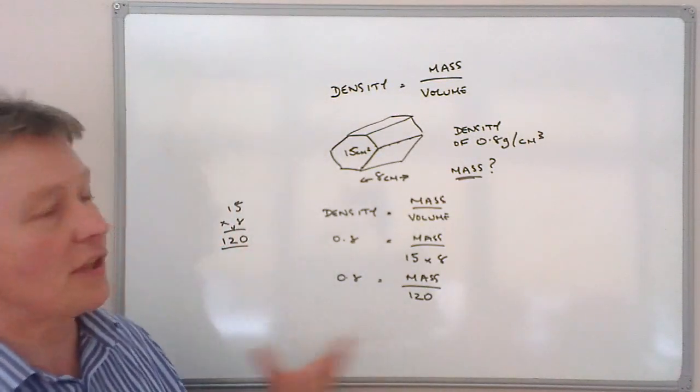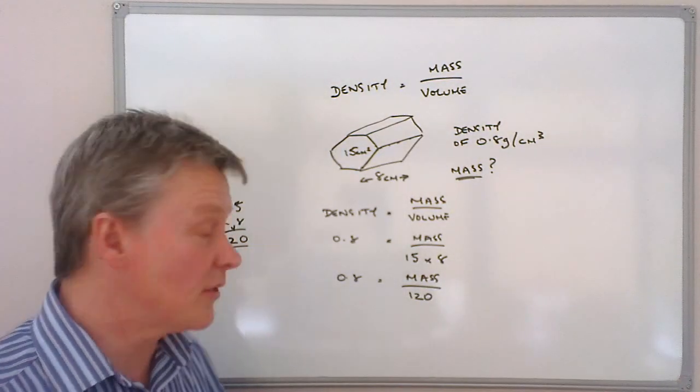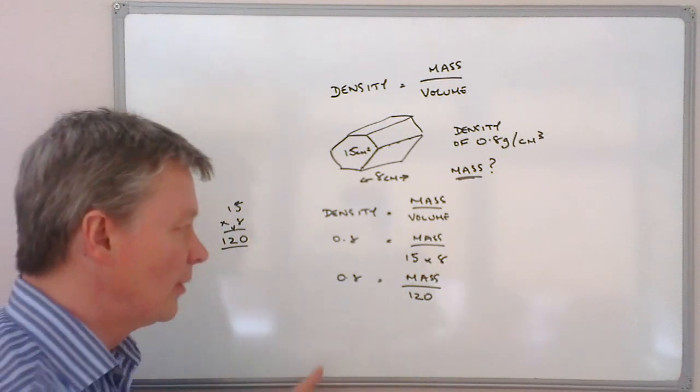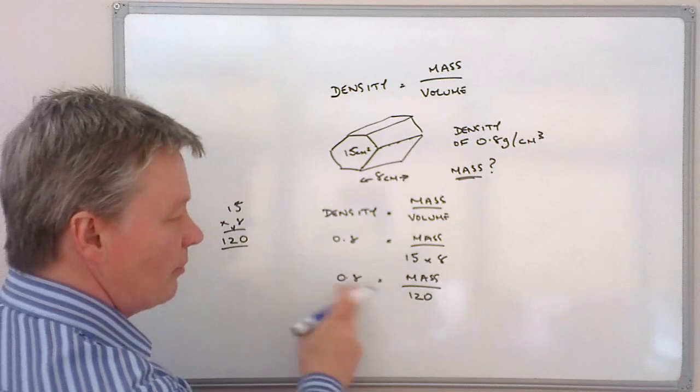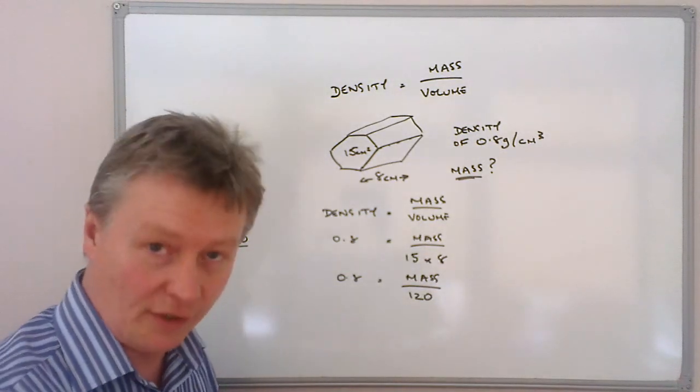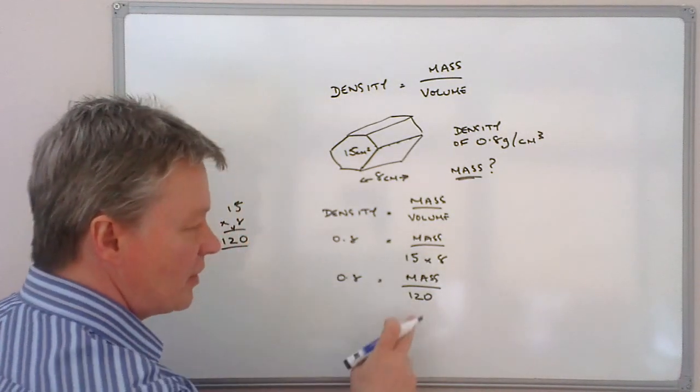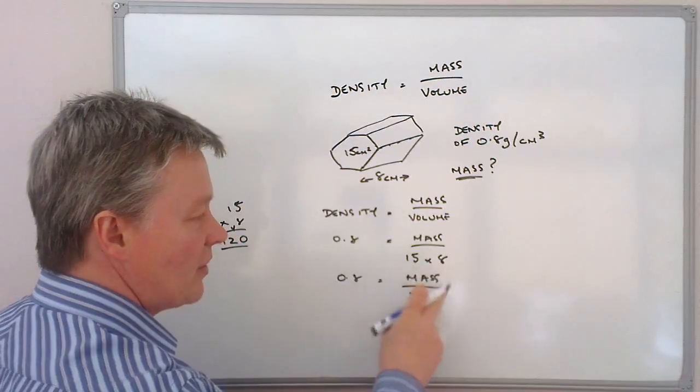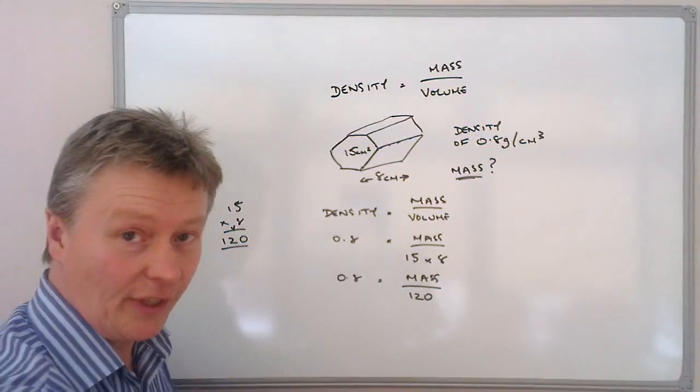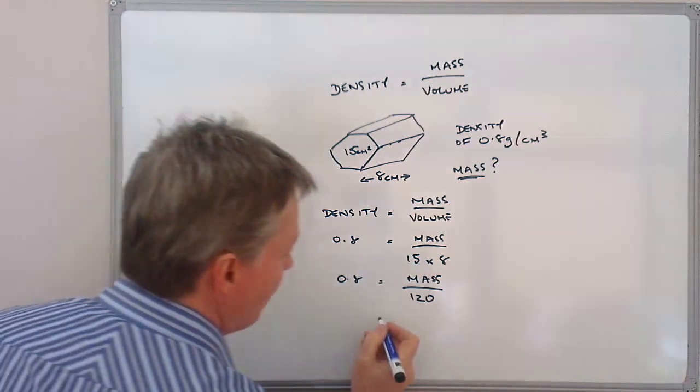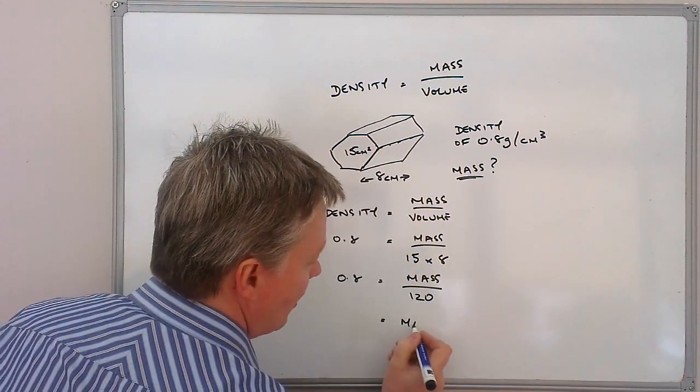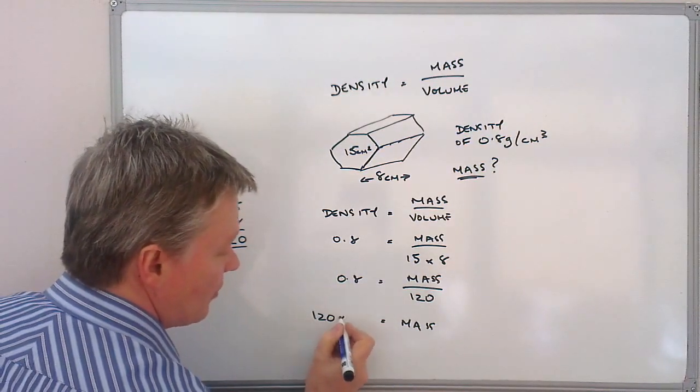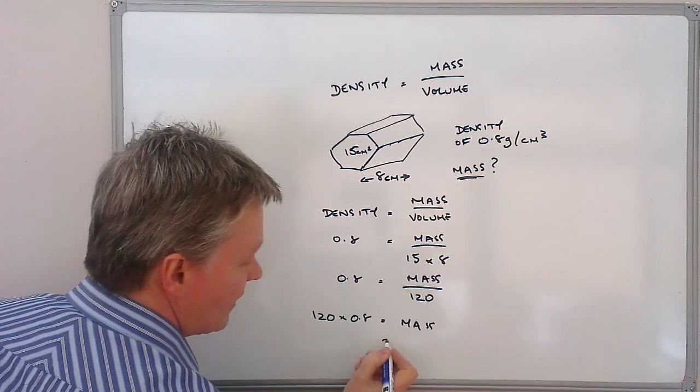Now if you have a look at some of the algebra videos that are on the side as well, it will show you that what I normally do with these is I multiply both sides by 120, because if I do that it will cancel this side out and it also means that I get mass left on its own. So that's what I'm going to do. I'm going to multiply both sides by 120, which means that mass will be 120 times 0.8.